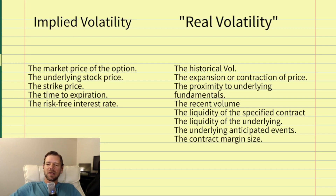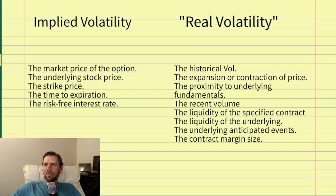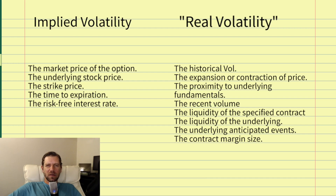To get the implied volatility that you see on options cards, all these factors get combined in what's called the Black-Scholes formula. It was invented in the 70s or 80s, but what is relevant is that it's being used by all the big banks, market makers, and market participants in order to price options and determine this volatility number.